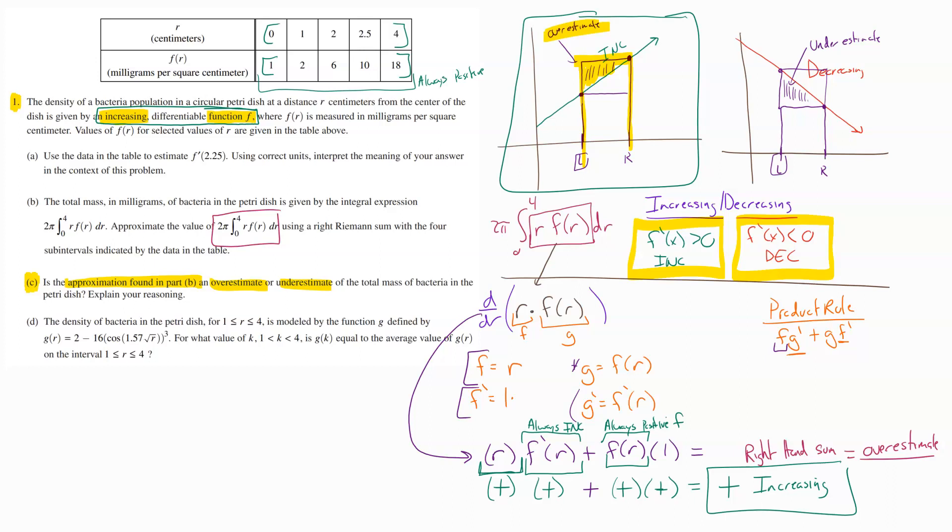And so that tells us that this is going to be an overestimate. And so on this problem, this part of the problem was worth two points. Really, they gave you one point here for finding your actual derivative. And then they gave you a second point here for connecting this increasing, decreasing, the increasing portion with a right-hand sum to tell them the final answer was an overestimate.